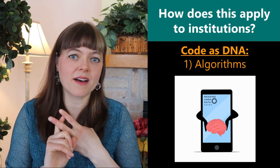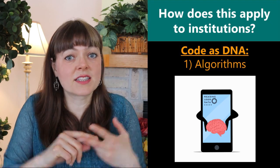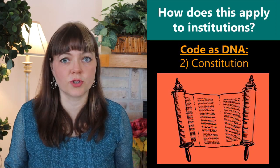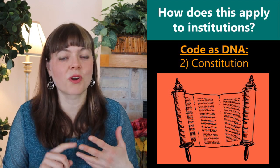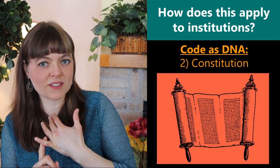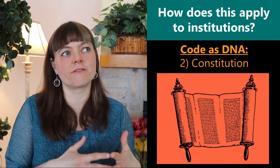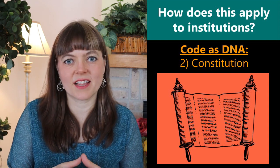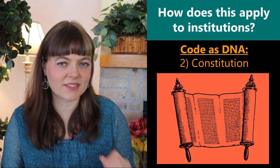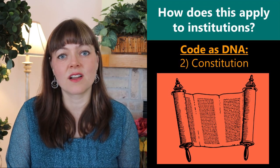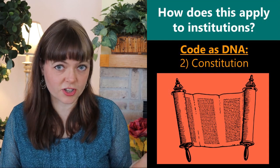The second type of information that might be on a blockchain is the constitution of the institution. What are the roles within the institution? What are the rules? How are those rules enforced? What sort of processes aim to preserve due process and protection of justice within the institution? How are the incentives aligned? All of this stuff is essentially the constitution of how the institution is structured.